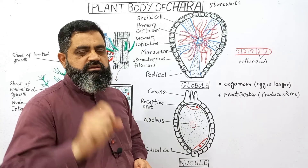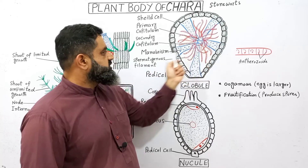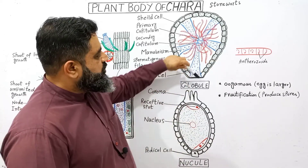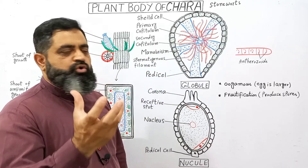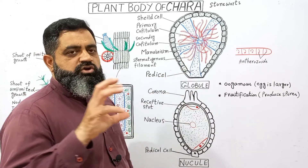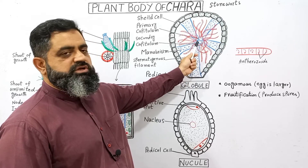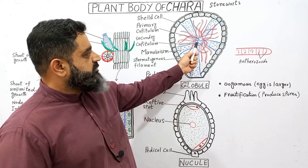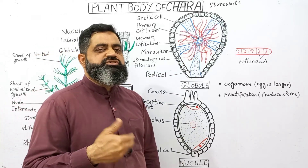In the center of the globule you can see girdle-like, rod-like structures known as manubria, which arise from the center and go towards the boundary. At the boundary there is a layer of cells known as shield cells, which protect the whole globule. The manubria start from the shield cells and terminate at the center. Where all the manubria meet there are round structures known as primary capitula. From the primary capitula arise secondary capitula, and from secondary capitula, tertiary capitula also arise.